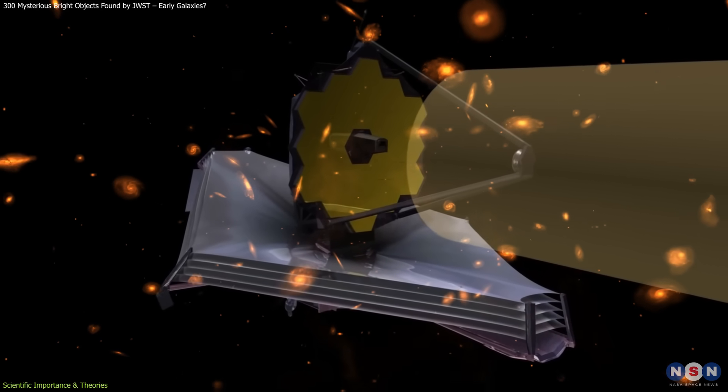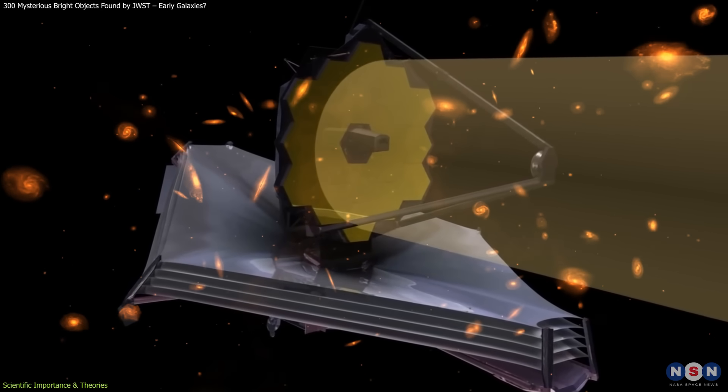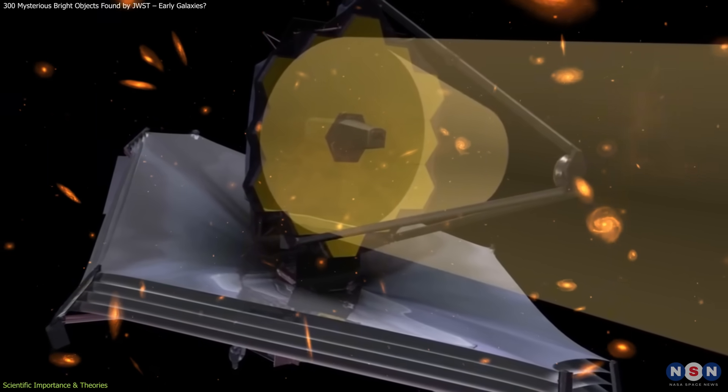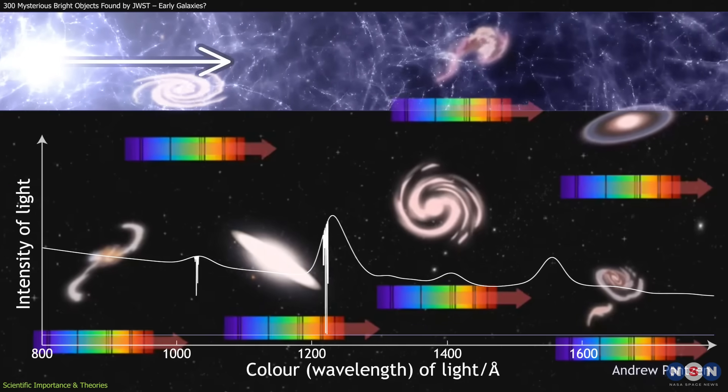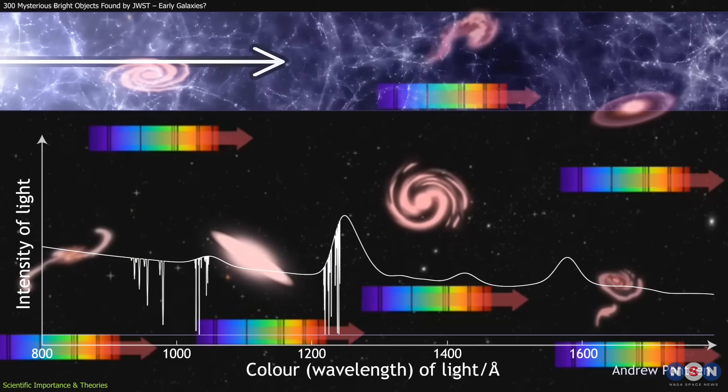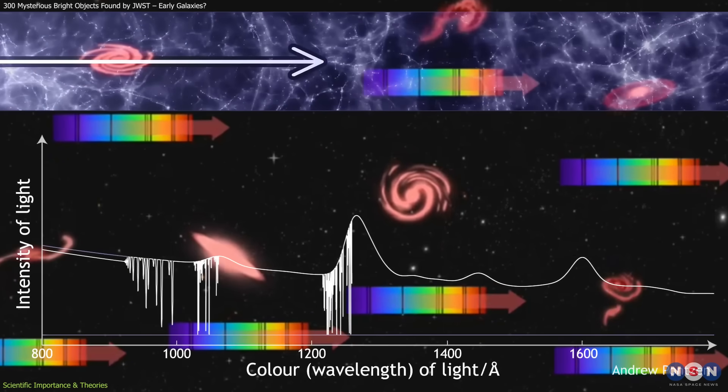Without spectroscopy, it's difficult to distinguish between genuine early galaxies and such look-alikes. The dropout technique is efficient for identifying likely high-redshift objects, but it's not definitive.